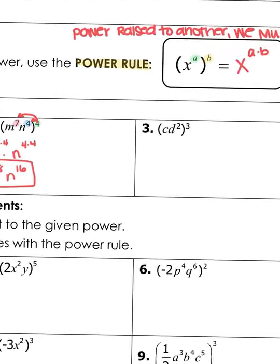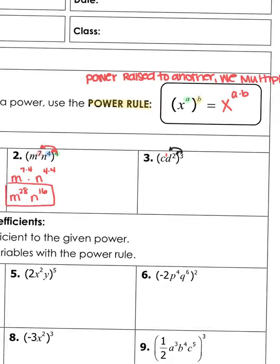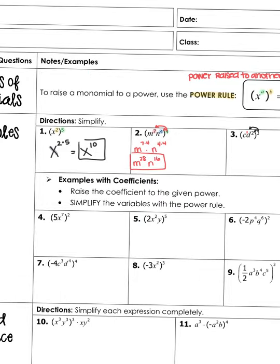Go ahead and try number three on your own. Keep in mind, there isn't an exponent written on our c, and when there isn't anything written there, it's assumed that there's a one there. So that's c to the first power and d squared, or d to the second power, and we're cubing that whole thing. Go ahead and multiply that power of three in — power to a power means we multiply.